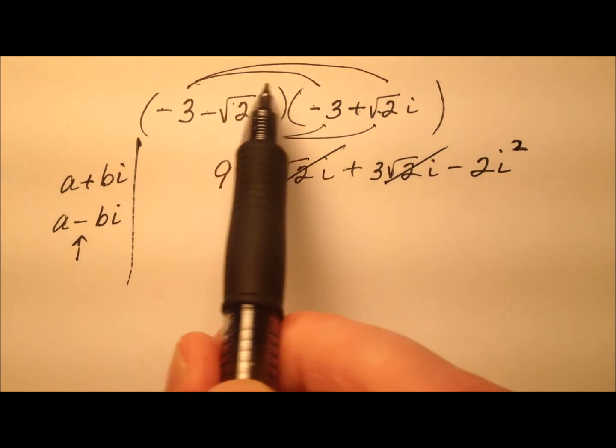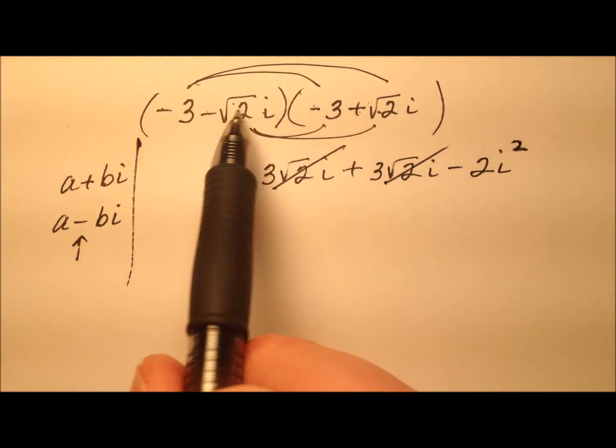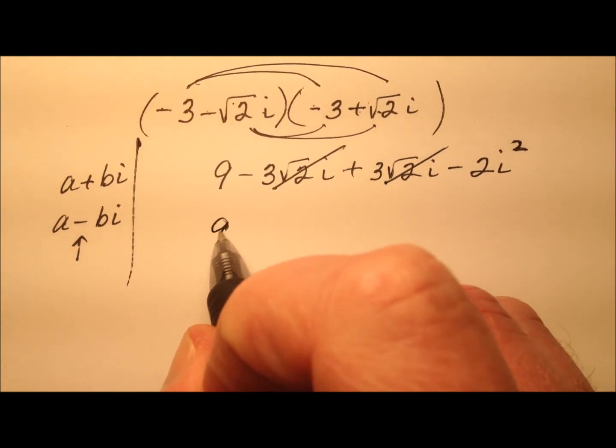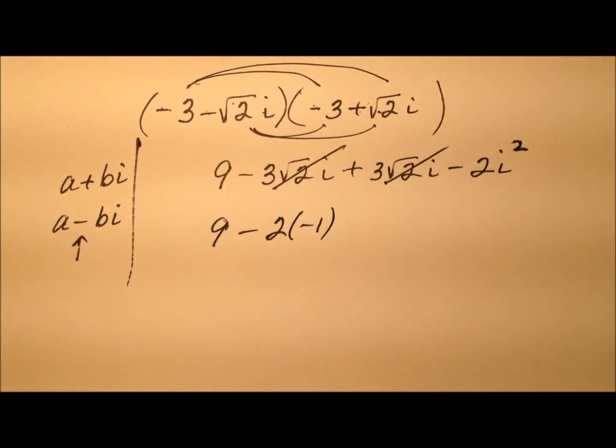That's by design, since what we've done here is we have created a difference of squares factorization. So 9 minus 2i squared, which is really just 9 minus 2 times negative 1. So 9 plus 2, and that'll equal 11.